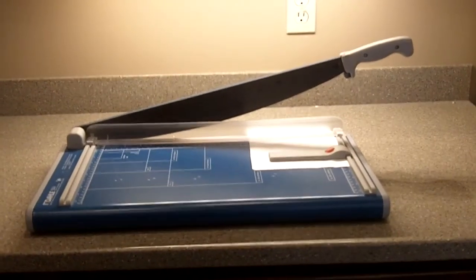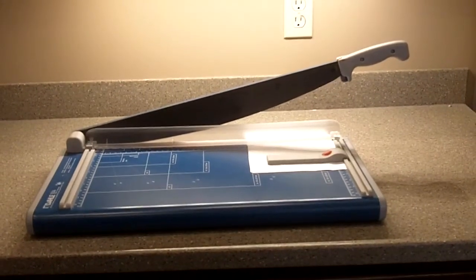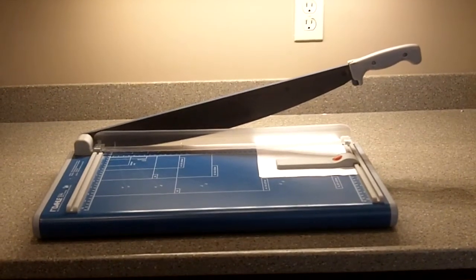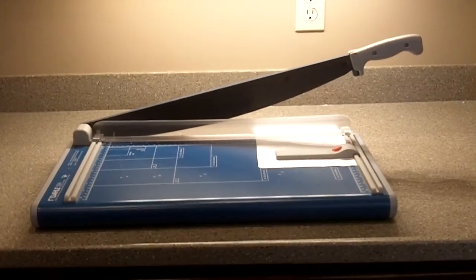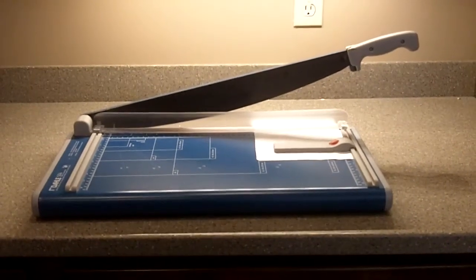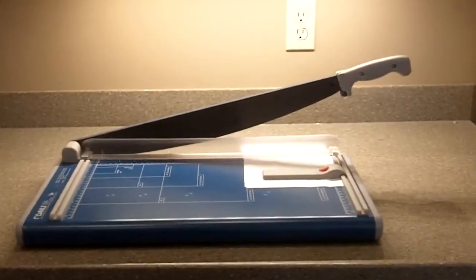Not too many moving parts on this. It's rather simple. The blade is sharp, so you have to be careful. It has a nice cutting guard, which is removable and can be cleaned. And it's got a paper weight that uses a magnet. You can cut up to 15 sheets of paper, and it's an 18-inch cutter.